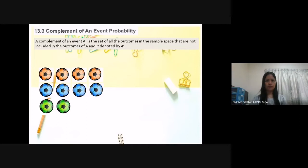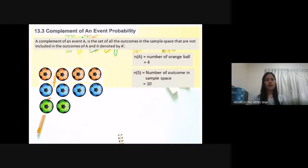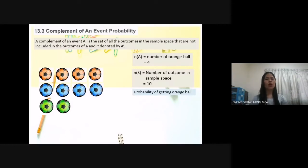We have 10 balls here. The number of orange balls equals four, and the number of outcomes in the sample space is 10. So the probability of getting an orange ball is four over 10, which simplifies to two over five.